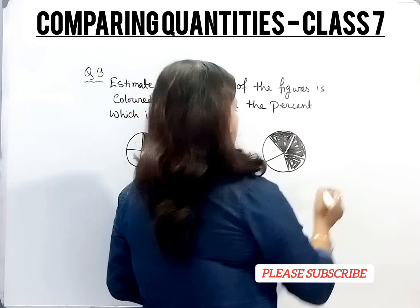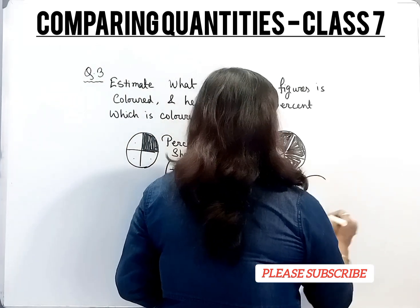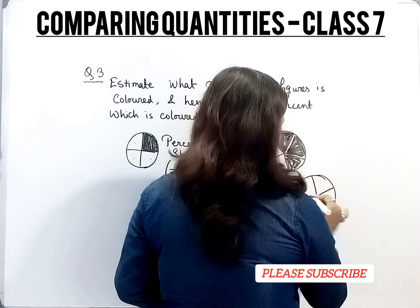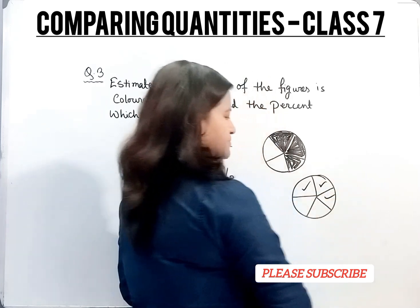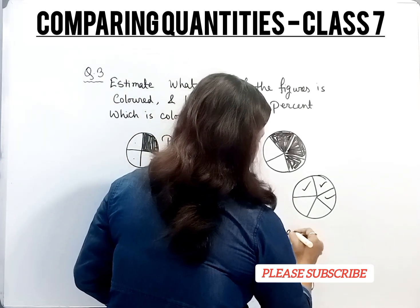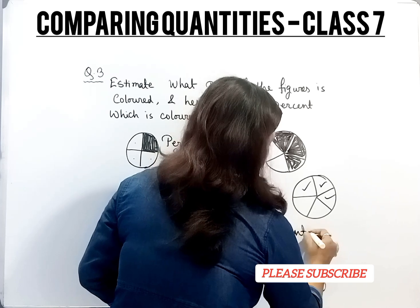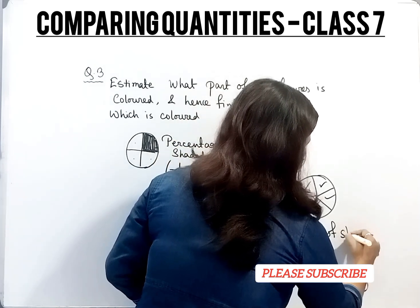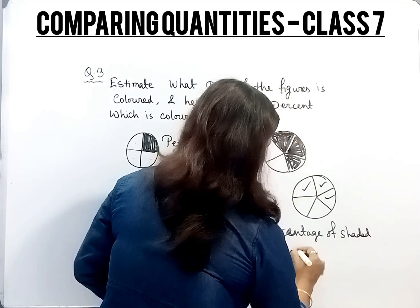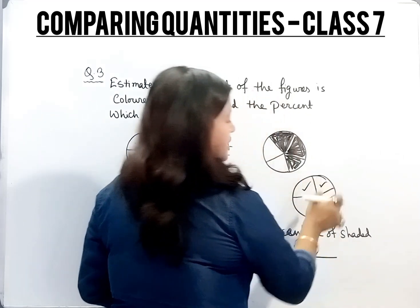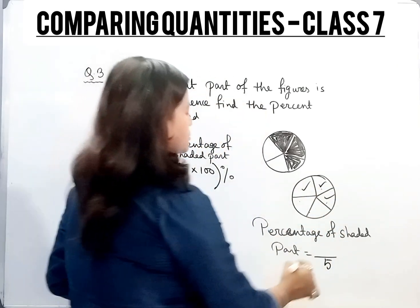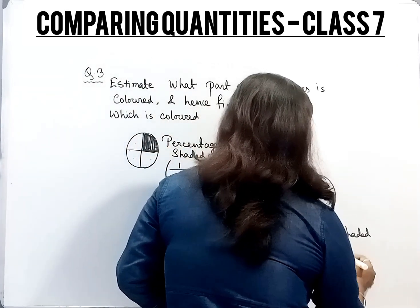Now second one. There is a circle and this circle is divided into 5 equal parts, and 3 parts are shaded. So percentage of shaded part equals: total there are 5 parts—1, 2, 3, 4, 5—and 3 are shaded.